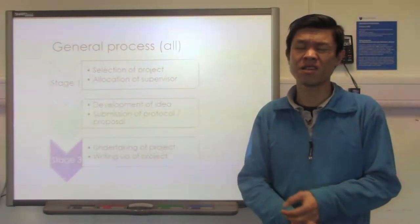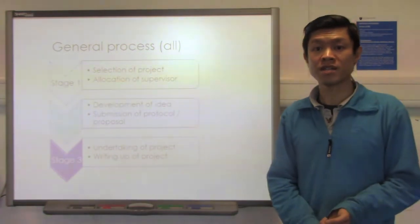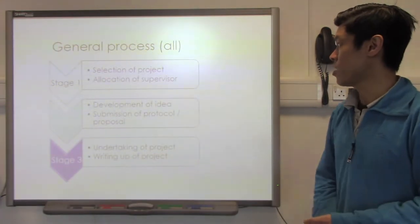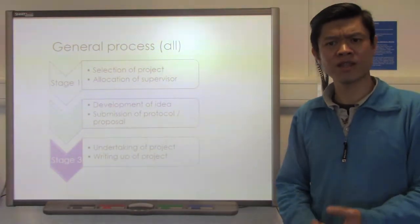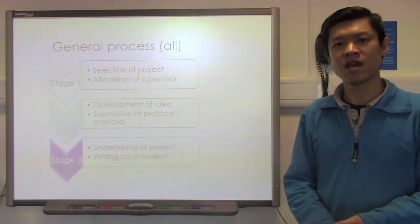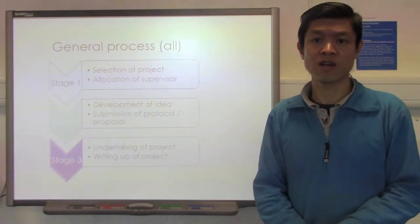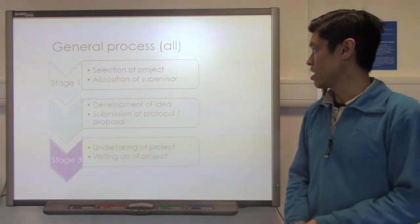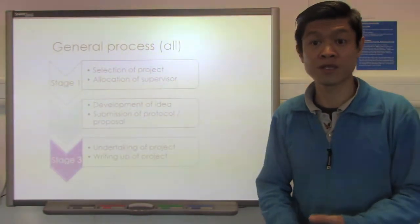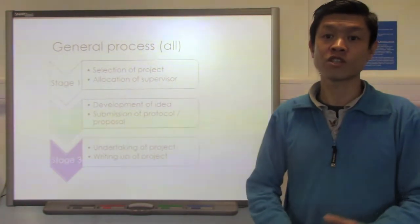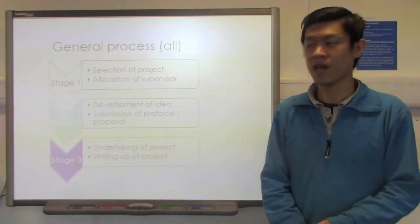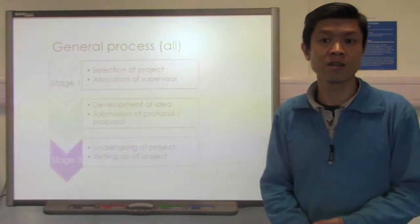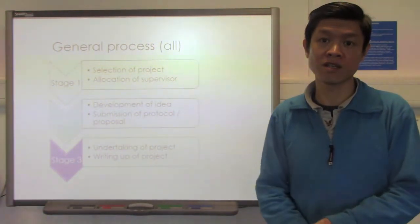If we break down the entire dissertation into stages, it actually consists of three main stages. The first stage is where you select your project, think about what you want to do, and after which we match you up with appropriate supervisors. The second stage is where you further develop your idea into a more advanced level, then write up your proposal or protocol and submit all the paperwork to get the relevant approvals needed to conduct the project.